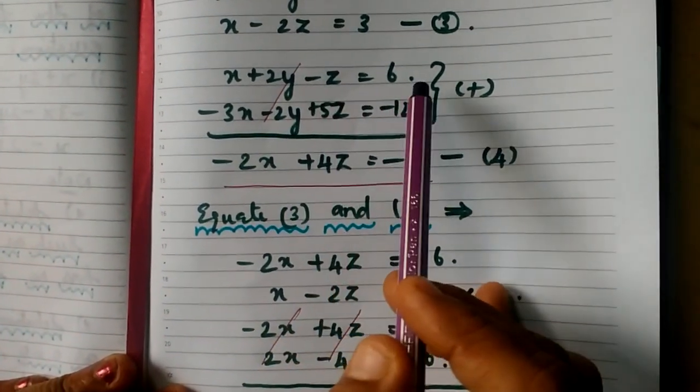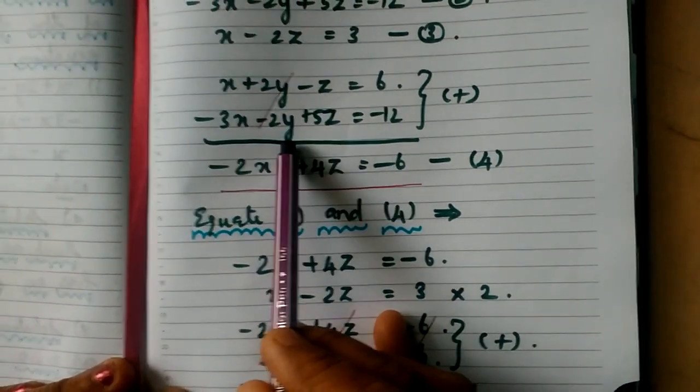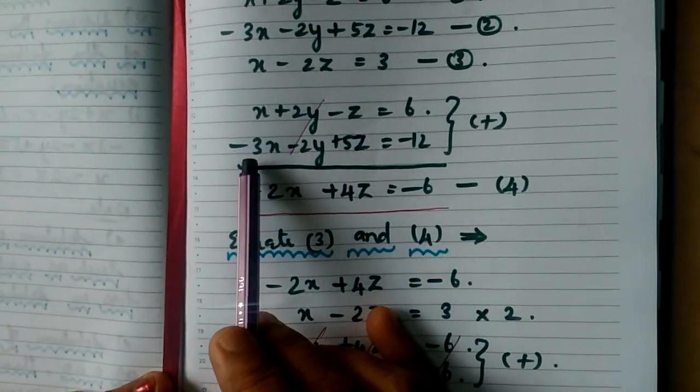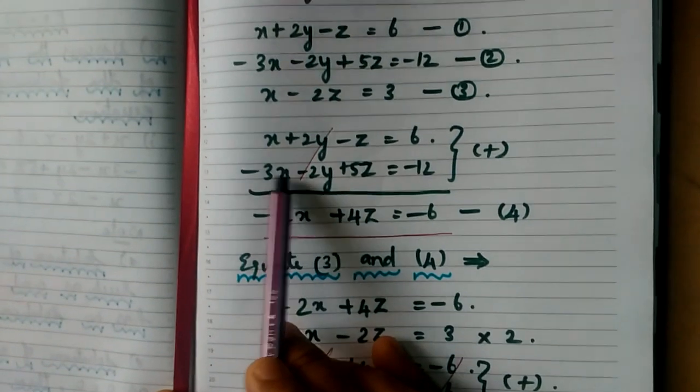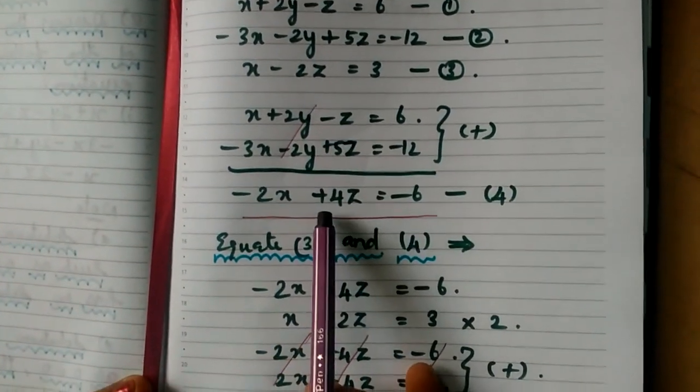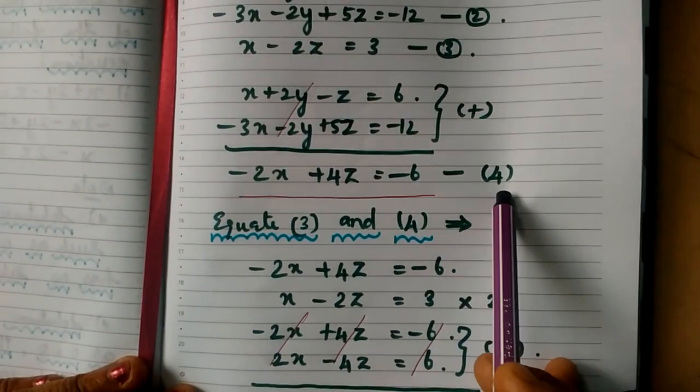So X plus 2Y minus Z equal to 6, minus 3X minus 2Y plus 5Z equal to minus 12. So this plus 2Y minus 2Y become cancel. Balance the remaining terms: minus 3X plus X become minus 2X. Here, minus Z plus 5Z become plus 4Z equal to minus 6. This is equation number 4.